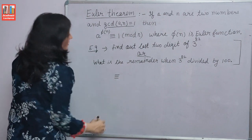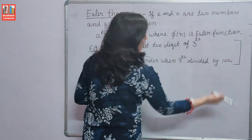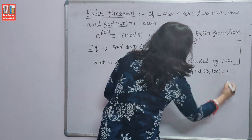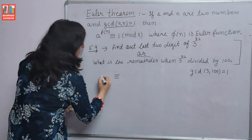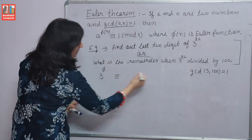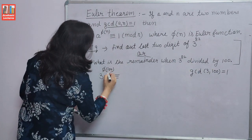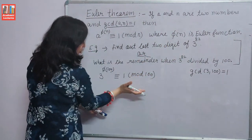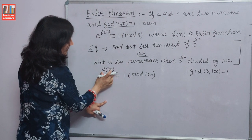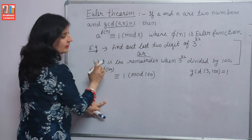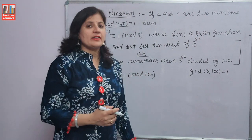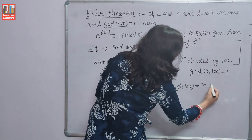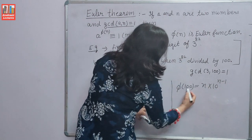First we need to check GCD of A and N — 3 and 100. GCD of 3 and 100 is equal to 1, then we can use Euler's theorem. A raised to the power phi(N), where N is 100, is congruent to 1 mod 100. So 3 raised to the power phi(100) is congruent to 1 mod 100. Now 100 equals 10 raised to the power 2, and phi(10 raised to the power n) equals n times 10 raised to the power n minus 1.